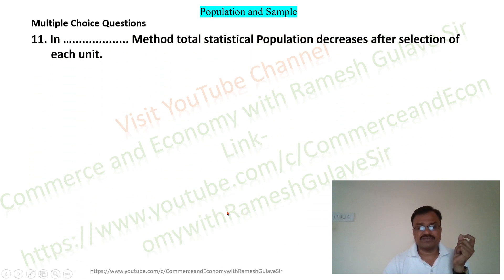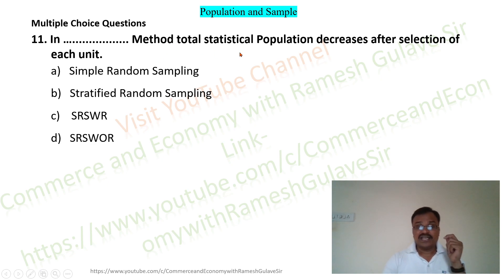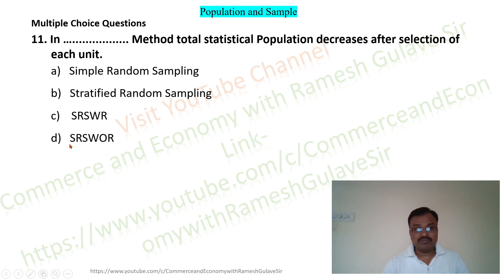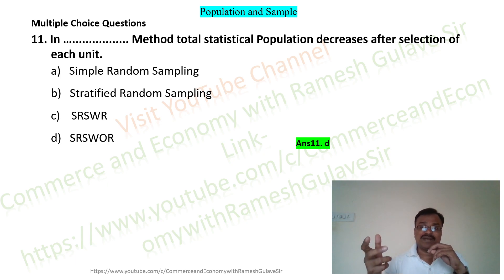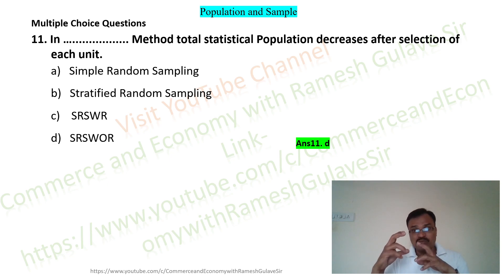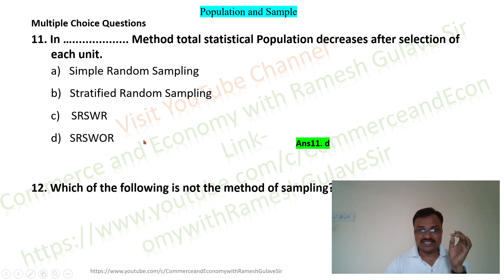The next question says: in dash method, total statistical population decreases after selection of each unit. The options include: simple random sampling, stratified random sampling, simple random sampling with replacement, and simple random sampling without replacement. In simple random sampling without replacement, the selected element is kept aside and not returned to the population, so the total population decreases after each selection. Option B is the right answer.